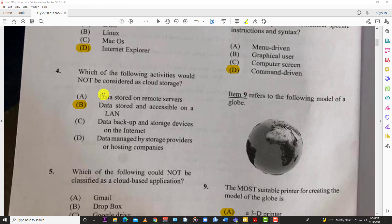Number four: which of the following activities would not be considered as cloud storage? The answer is B, data stored and accessible on a LAN - that's a local area network, so that's not cloud. Cloud is where you have service off-site, like your email address, Google Drive, OneDrive, Outlook address. All those are stored in the cloud, off-site somewhere on servers.